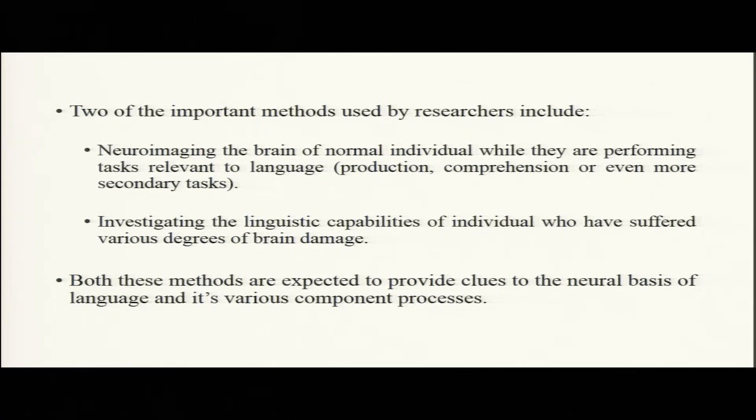A very important source of information also comes from assessing the linguistic abilities of individuals who have suffered some form of brain damage. This is where it all started — you look at an individual's brain that has some major lesion or damage, and you say: corresponding to this damage in this area, what are the cognitive abilities that are lost? That helps you make direct connections between brain areas and cognitive functions. Both these methods have been used by linguists, neuroscientists, and psycholinguists to look at the various component processes of language.